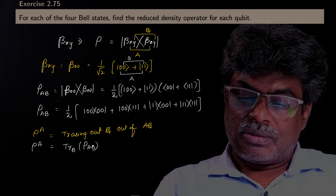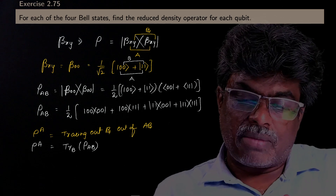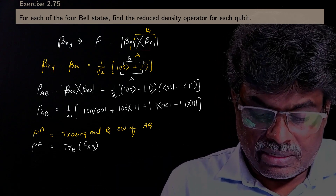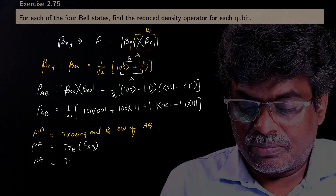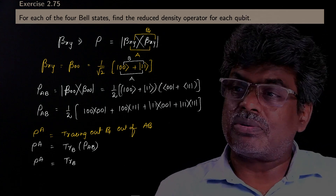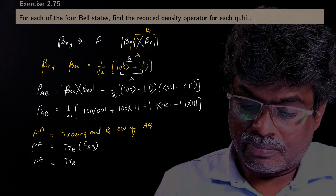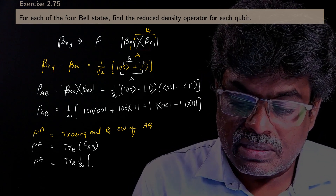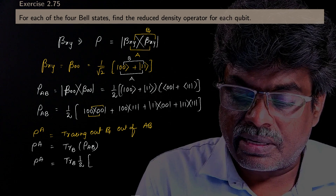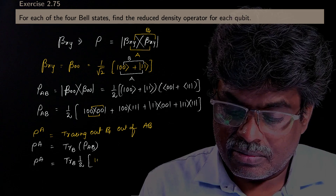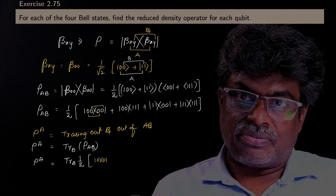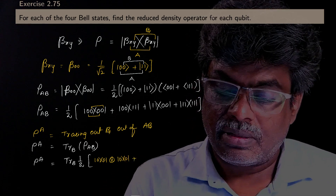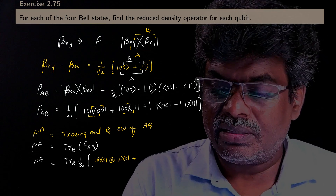As we have seen earlier, first let me express ρ_A by tracing out B. I am going to write the composite system by splitting into tensor products of individual qubits: |00⟩⟨00| = |0⟩⟨0|_A ⊗ |0⟩⟨0|_B, and |00⟩⟨11| = |0⟩⟨1|_A ⊗ |0⟩⟨1|_B.